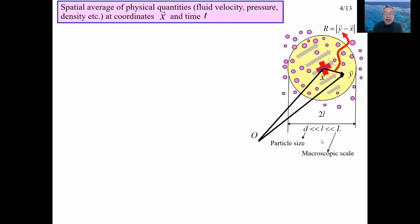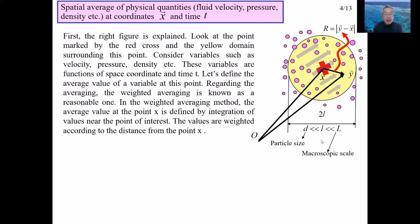In the last slide, for particles, the velocity and position of individual particles are calculated, and for fluid, the spatially averaged values are treated. In the figure on the last slide, the averaging is done in sections divided into squares. From now on, we will generalize the averaging method and treat it rationally. First, the right figure is explained.